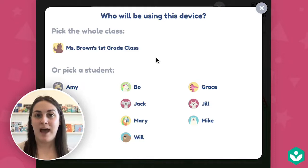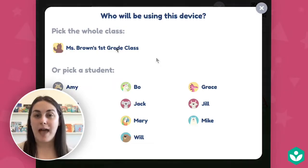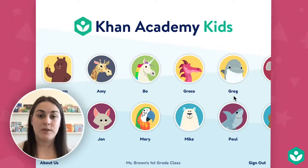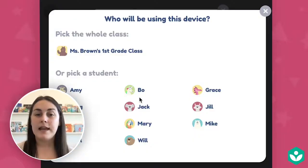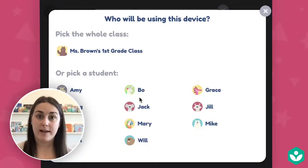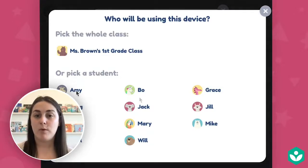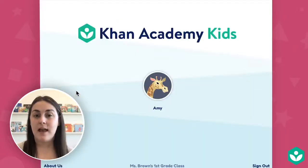Now you'll see this screen that asks who will be using this device. If you're a teacher using a shared device in your classroom, go ahead and pick the whole class. It will set the screen so that when students open the app, they'll need to pick their name from the whole class view. If you're a teacher with one-to-one devices in the classroom or a parent using the app at home, pick the specific student name who will be using the device. This will set the screen so that the student only sees their name and avatar when they open the app.